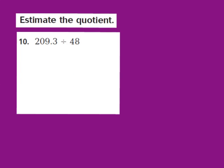Let's take a look at question number 10. Our job is to estimate the quotient using compatible numbers — numbers close to the given numbers that work well together. They give us 209 and 3 tenths divided by 48. Looking at my divisor of 48, a whole number close to 48 that is easy to work with mentally is 50, so I'll turn 48 into 50.